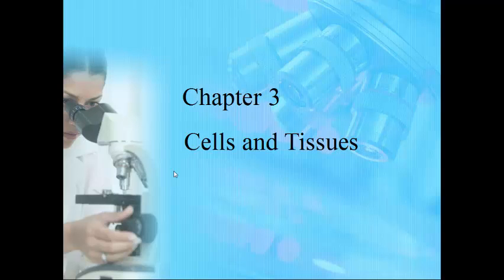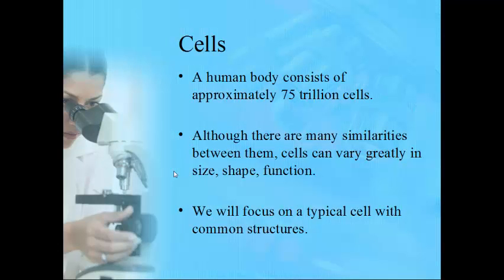Welcome back. This chapter we will go over cells and tissues. The average human body will consist of approximately 75 trillion cells. Of course, that will vary greatly on the person's age, overall health, and their size, but roughly 75 trillion cells.